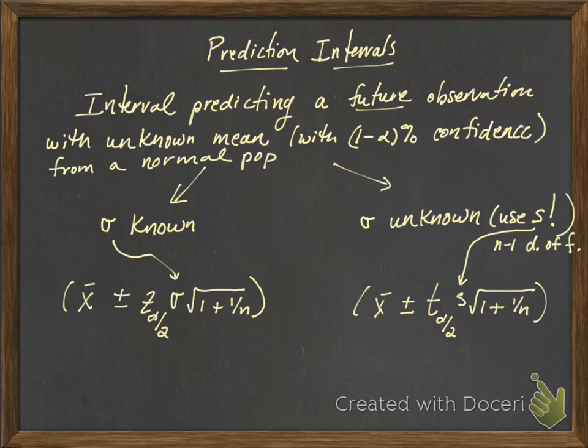You're given two cases: one is the case where sigma is known and one is the case where sigma is unknown. When sigma is known, we use our z-score and we use sigma in our formula. It's the sample mean plus or minus our special z times the standard deviation sigma times the square root of 1 plus 1 over n, the size of the sample.